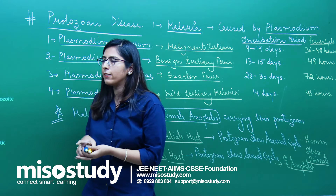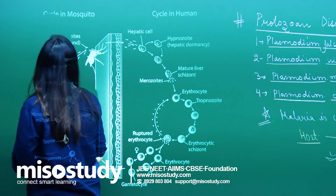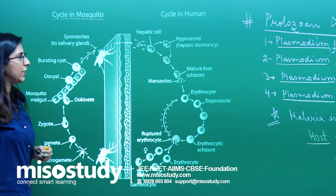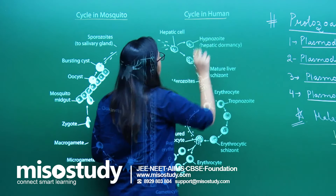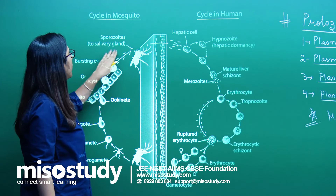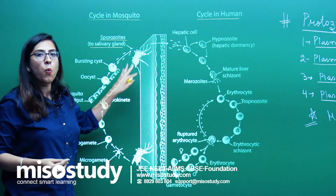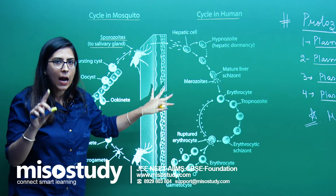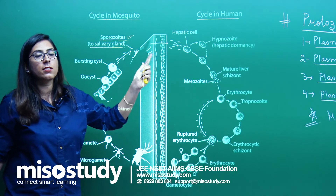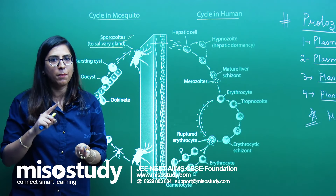Now let us talk about the cycle. As you can see, this is the whole cycle. I have divided it into two different phases: the cycle in the mosquito and the cycle in the human. Suppose a female Anopheles carries this protozoan — specifically sporozoites present in their salivary gland — and it bites us. These sporozoites are released into our blood and circulate for about half an hour.